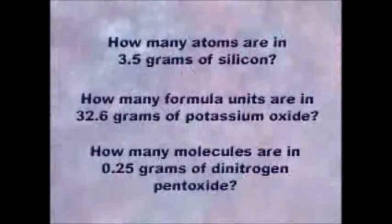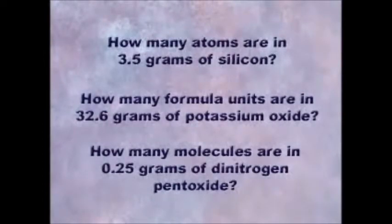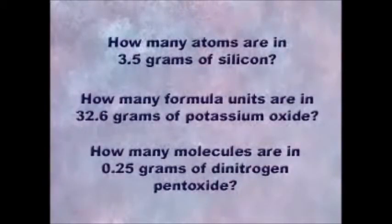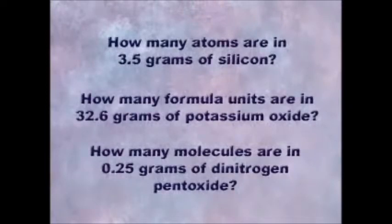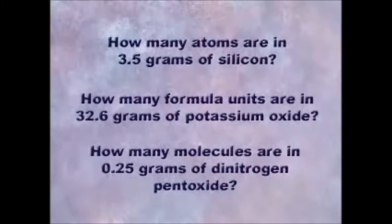That's a lot of atoms. Are you starting to get the hang of this counting thing? Your local teacher will put up these problems for your class to figure out. Then we'll try one more variation on this counting thing before we call it quits for the day. Don't get confused if you are solving for formula units or molecules. Remember that a mole of anything is equal to 6.02 times 10 to the 23rd formula units of potassium oxide, or 6.02 times 10 to the 23rd molecules of dinitrogen pentoxide.